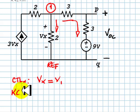KCL for node number one: current going in is 3 times Vx, which equals the current coming out, which is V1 over 2